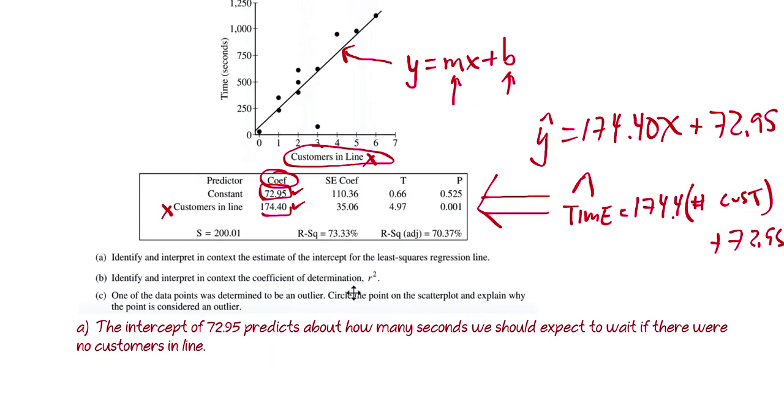So I would write this out as the intercept of 72.95 predicts about how many seconds we should expect to wait if there were no customers in line, zero customers. So you have to talk, first of all, when you look at the solution guide, it says you need to use the word predicts or estimates or we should expect.